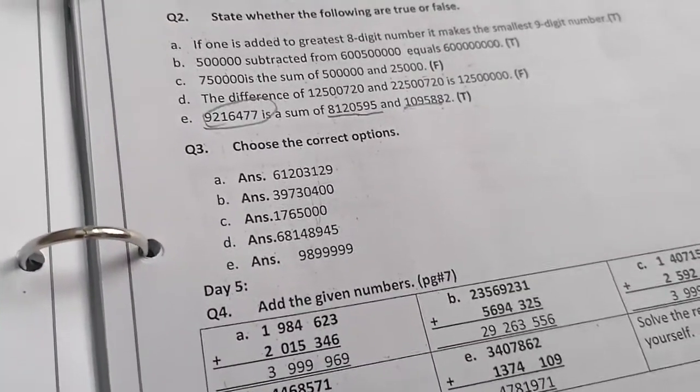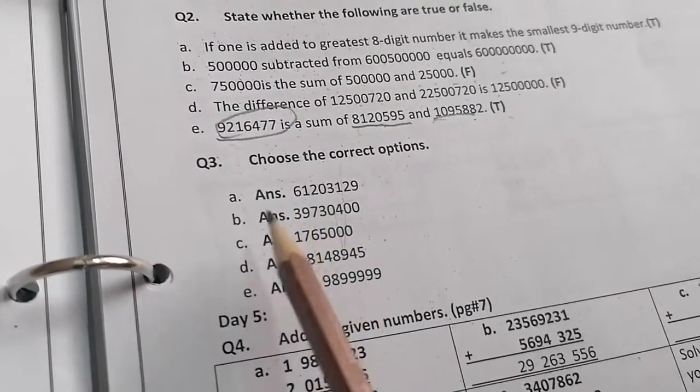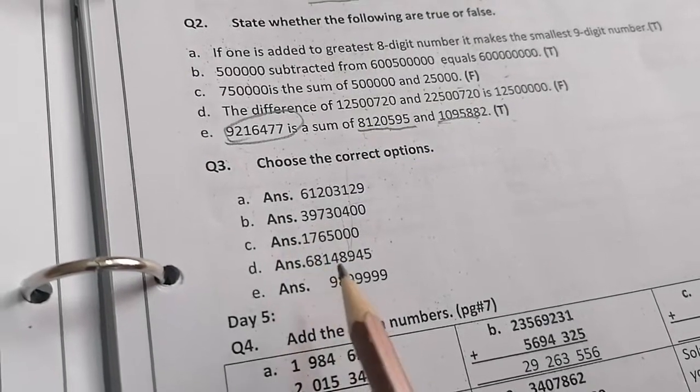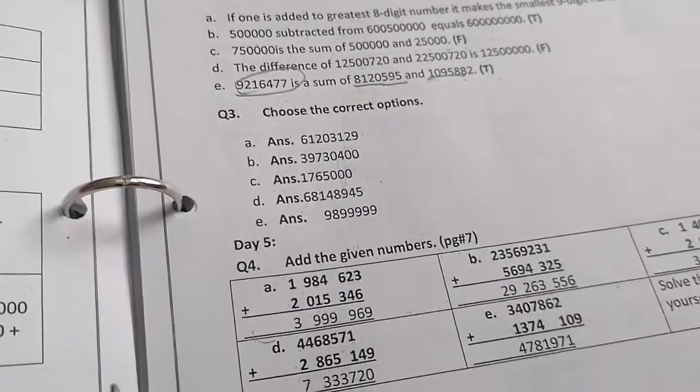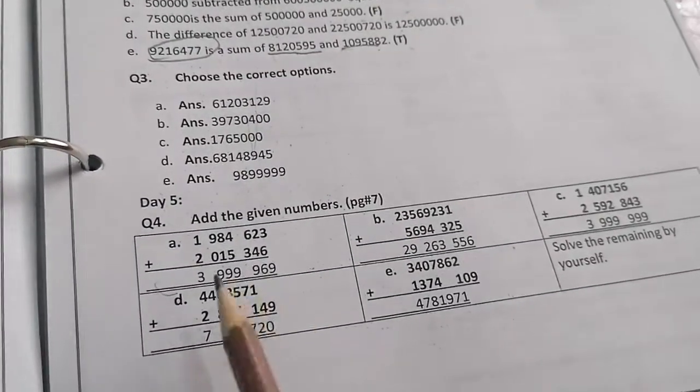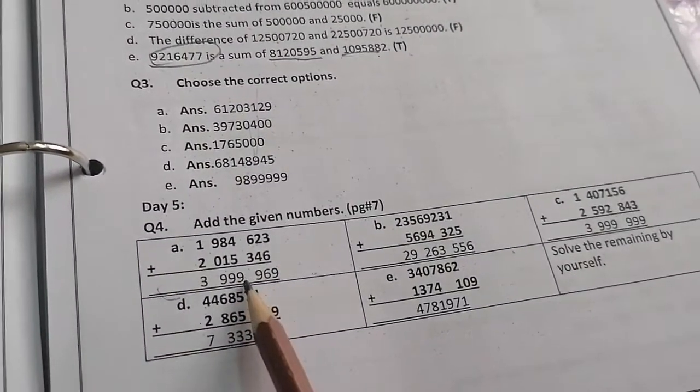Now, choose the correct options. Circle them or highlight them. Now, question number 4. Add the given numbers. Very simple and very easy.